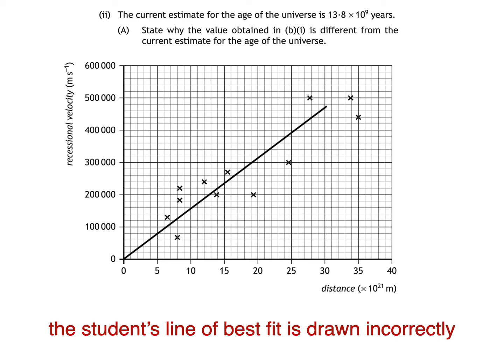Since the student's best fit line was steeper than the one I have, you could also say that the student's gradient is too large. Or, since the gradient gives a value for H0, the student's value for H0 is too large.